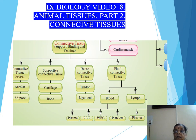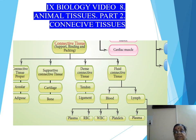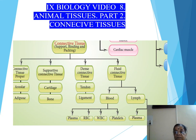We also learnt about muscular tissues where muscles are meant for movement and locomotion. Locomotion is movement of animals from one place to another, whereas movement is the movement of body parts for both plants and animals. The 3 types of muscles are skeletal or voluntary muscle (striated), smooth or involuntary muscle, and cardiac muscle.